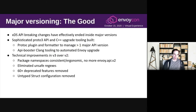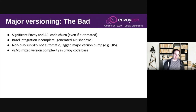A quick retrospective — the good, the bad, the ugly. On the good side: major versioning did solve our breaking change problem within major versions. We built sophisticated tooling in Envoy to automate most of the upgrades, so it was a lot smoother than if we'd done it manually. And there were a bunch of technical improvements in v3 over v2 which were made possible by the ability to break the API over the version bump.